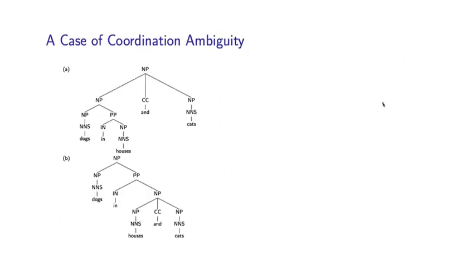Here's a second example. This is a case of coordination ambiguity. So here I have a phrase, dogs in houses and cats. And there's an ambiguity as to what this noun phrase, cats, is coordinated with. So in this first example, it's coordinated with dogs in houses. And in the second example, it is coordinated with just houses. So another classical example of ambiguity. These kind of coordination ambiguities come up everywhere.